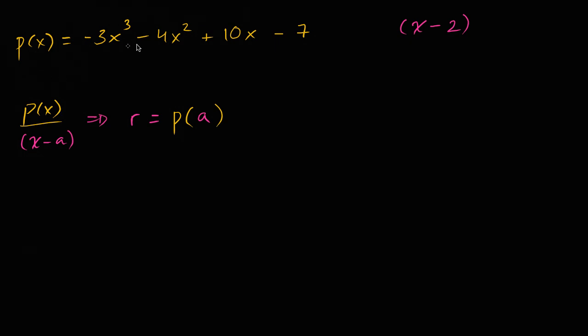So in this case, our p of x is this. What is our a? Well, our a is going to be positive two. Remember, it's x minus a. So to figure out the remainder, we just have to evaluate p of two. So let's do that.